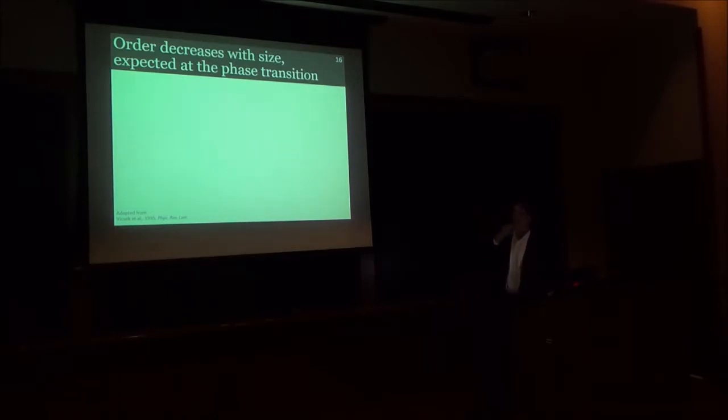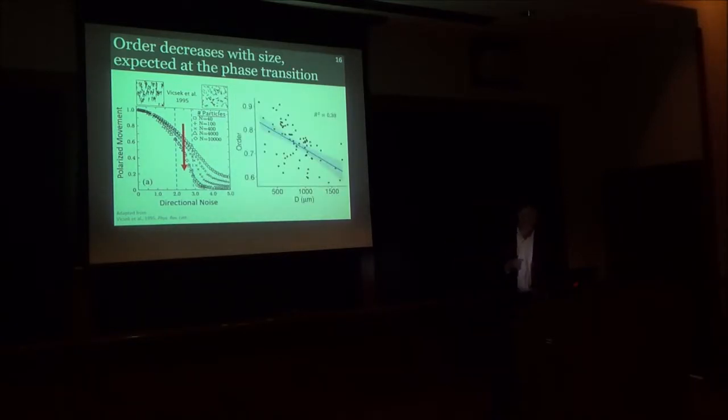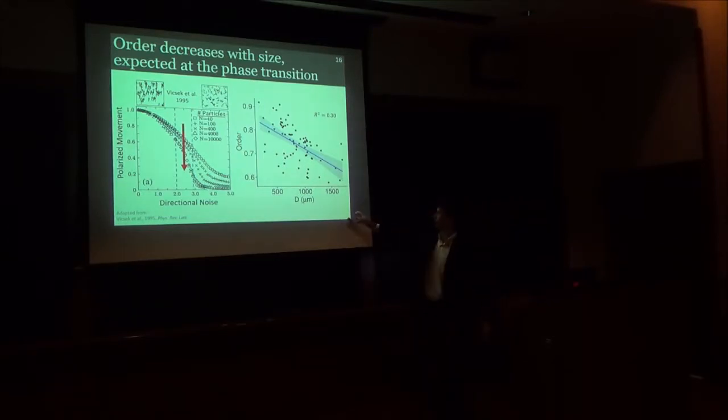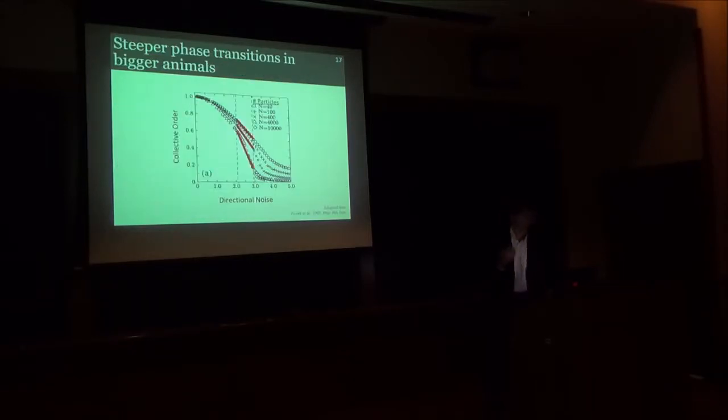One hypothesis of what we can think about how the system behaves at phase transition is that as systems would increase in size, we would expect the collective order to decrease at the phase transition. And of course, this is actually what I find in the Placozoa. Here I'm plotting the animals by their diameter on the bottom, and then I have their mean collective order measured. And there is a pretty significant downward trend of collective order with animal size. So this is one piece of evidence that suggests that they were at the phase transition.